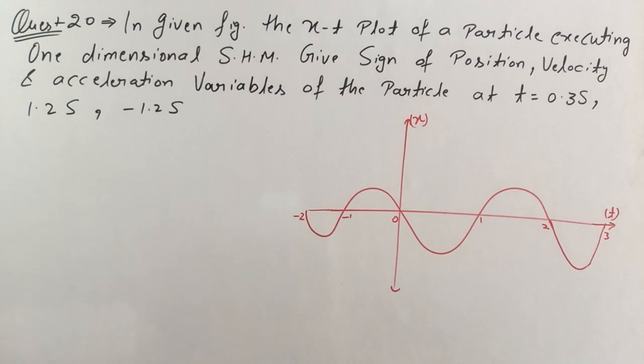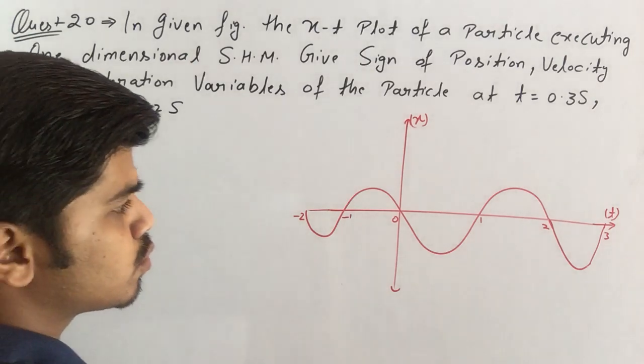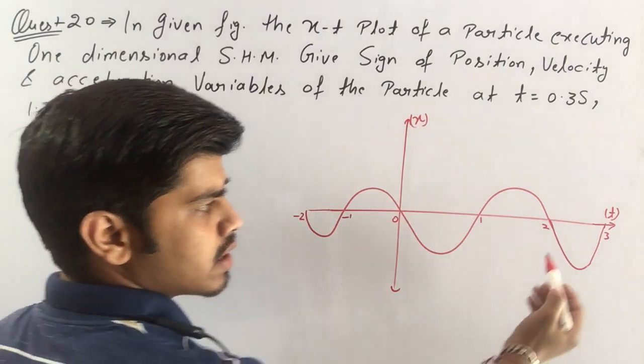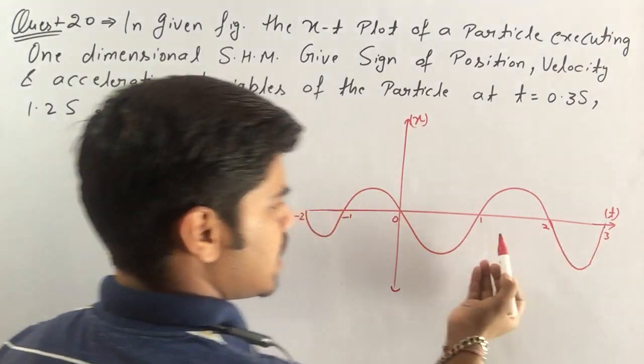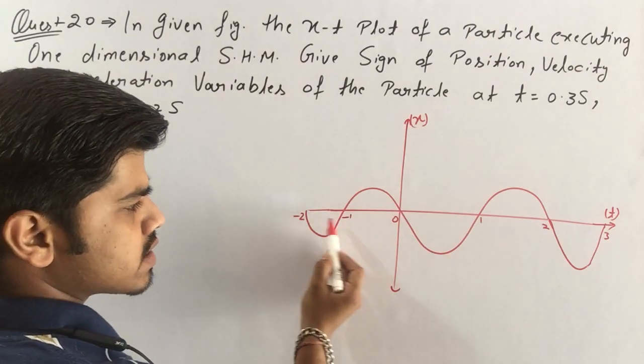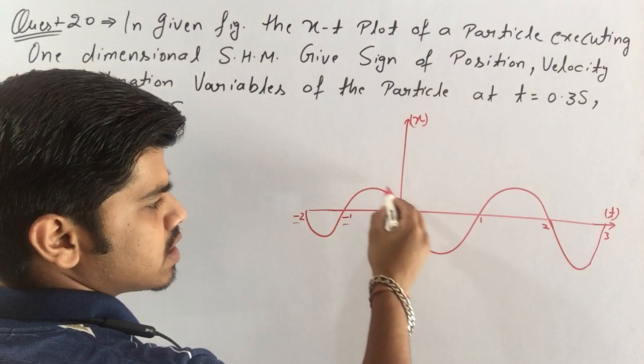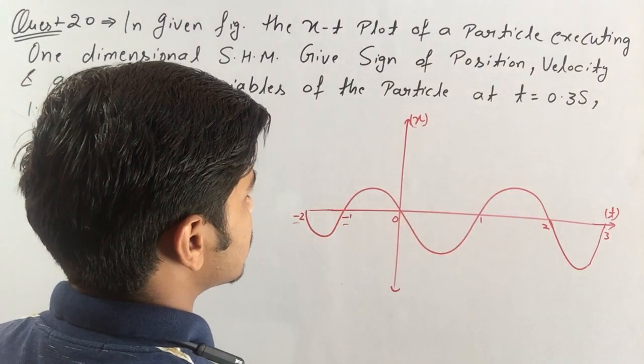Now students, in this question we are given a simple harmonic motion by a graph having time 1, 2, 3 and on negative axis minus 1 and minus 2. And the position is represented by this sinusoidal curve.